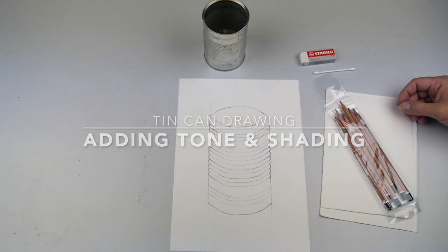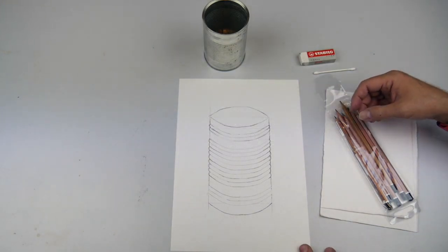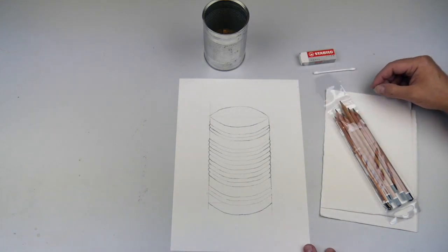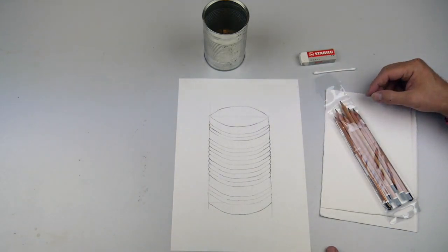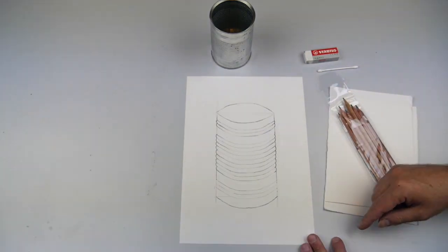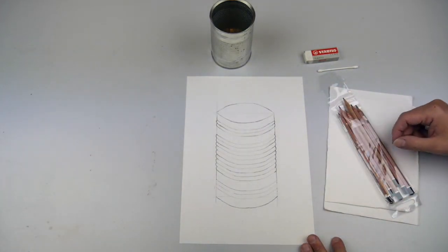The next part of the can drawing is to add the shading, the tone, the reflections, and all the fine details. But before we do that, we're going to check that the outline is done accurately.